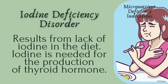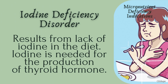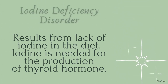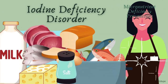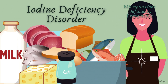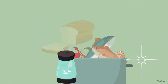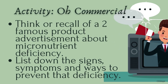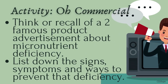Iodine deficiency disorder results from a lack of iodine in the diet. Iodine is needed for the production of thyroid hormone. To prevent iodine deficiency disorder, you need to take iodine-rich foods like iodized table salt, cheese, salt water fish, cow's milk, seaweed, eggs, shellfish, soy milk, and soy sauce.